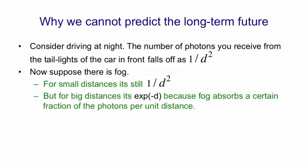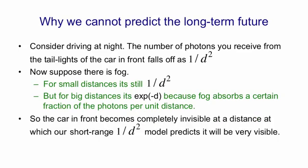So for small distances, fog looks very transparent. But for large distances, it looks very opaque. So the car in front of us becomes completely invisible at a distance at which our short range model, the 1 over d squared model, predicts it will be very visible. That causes people to drive into the back of cars in fog. It kills people.